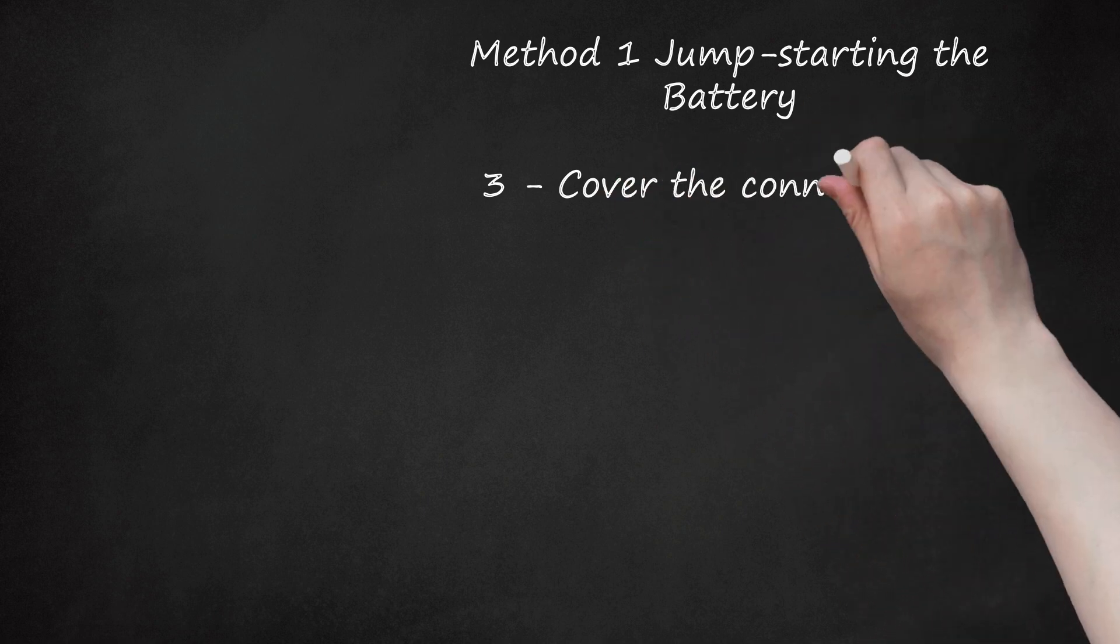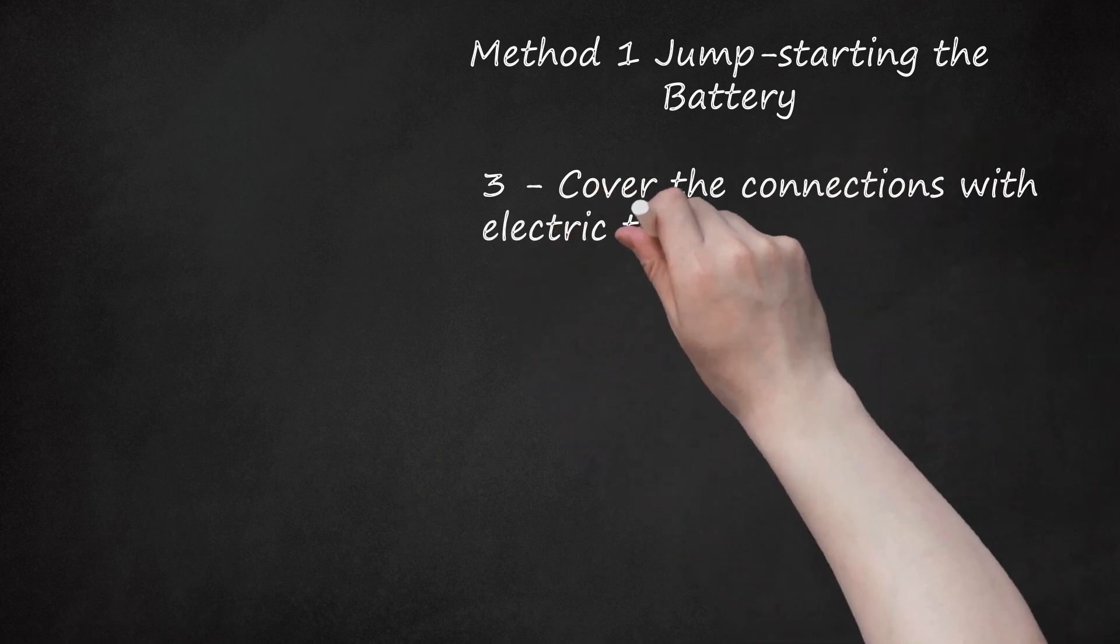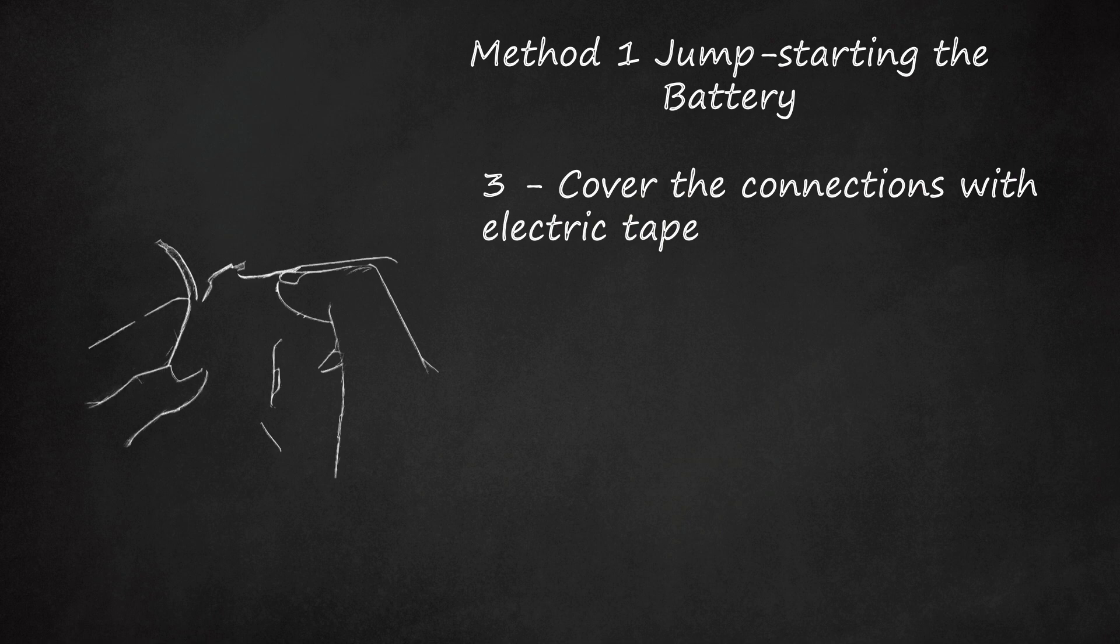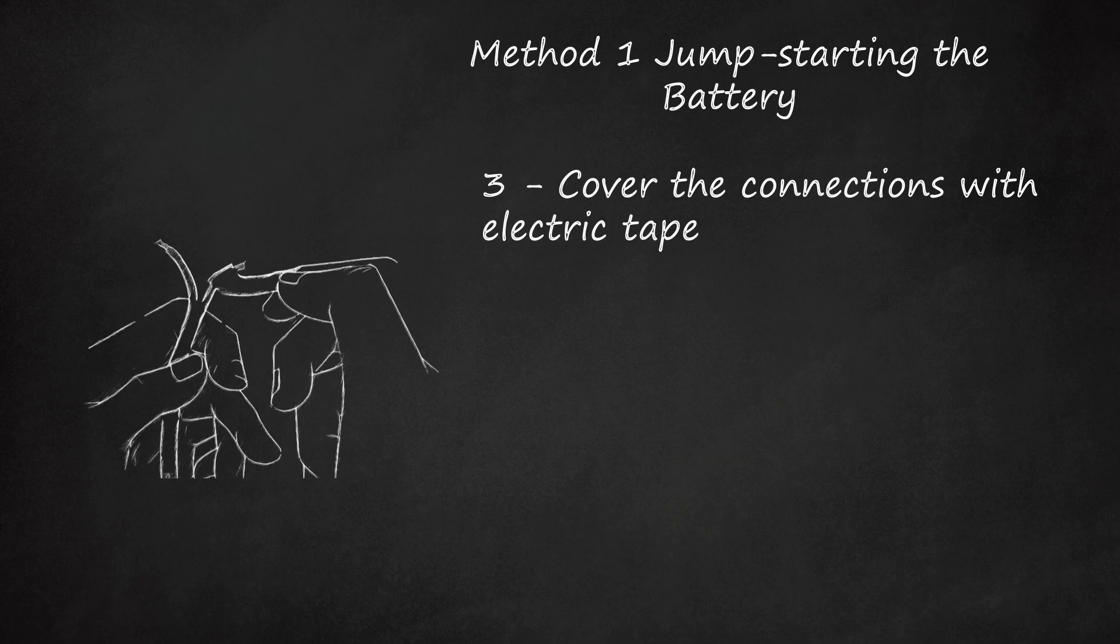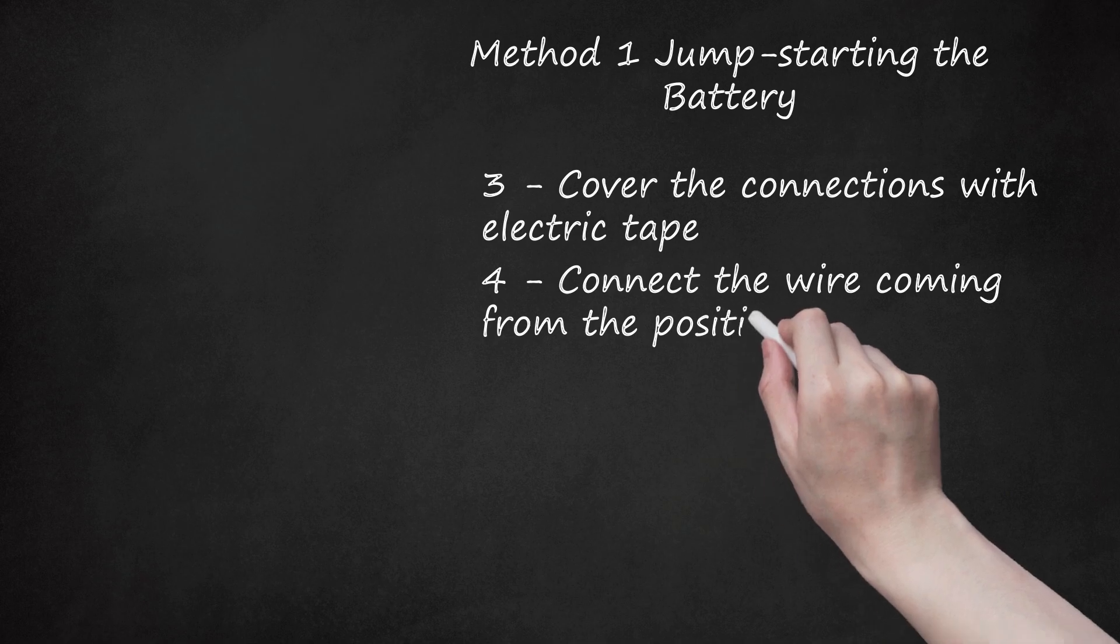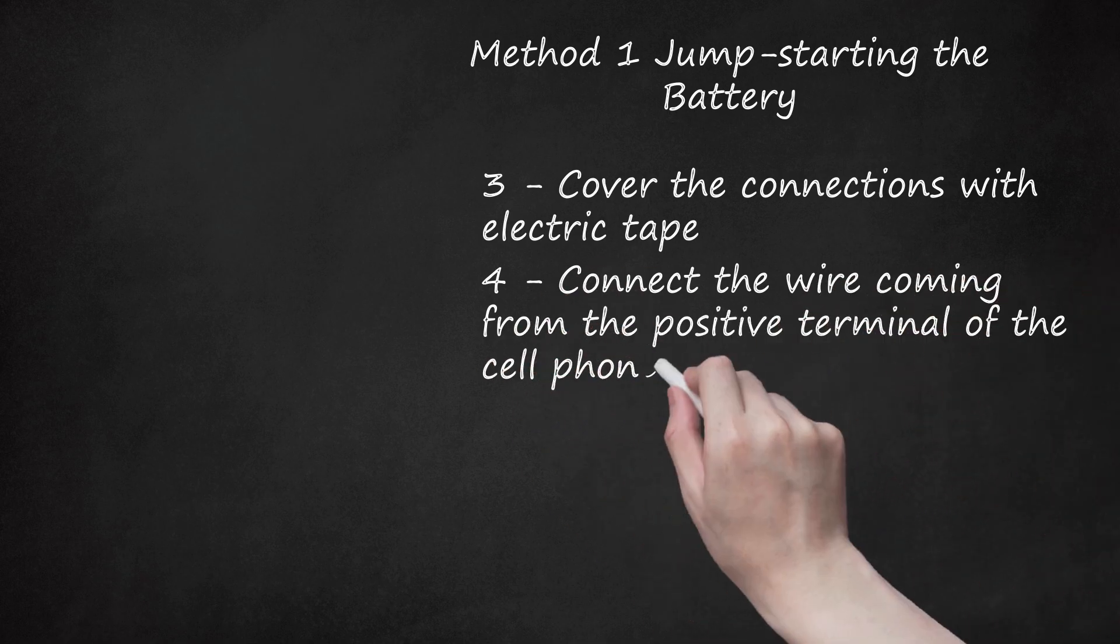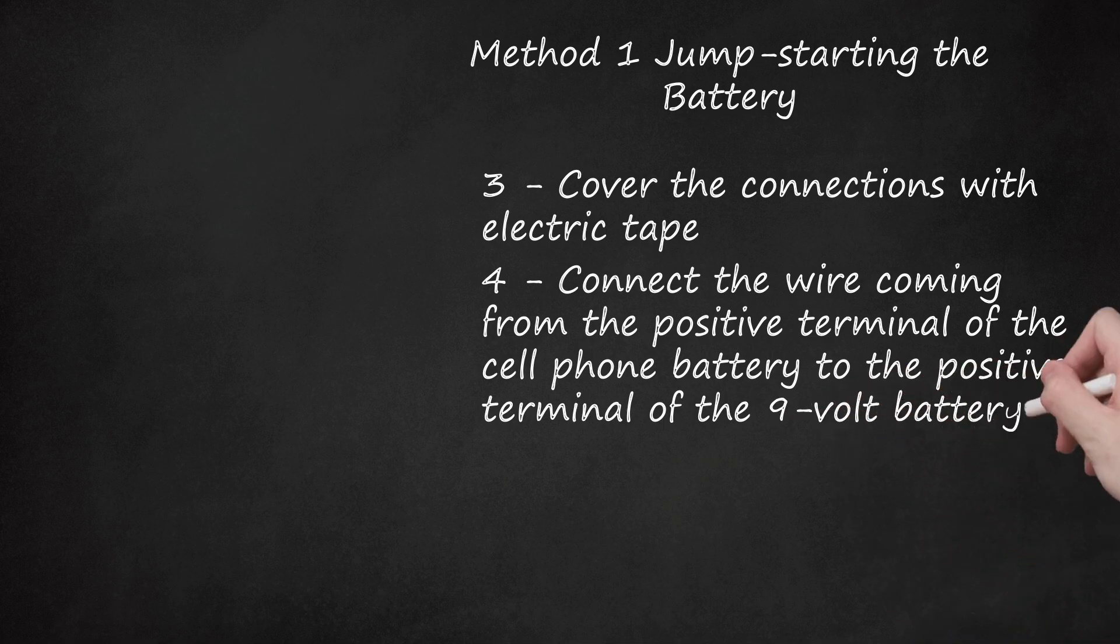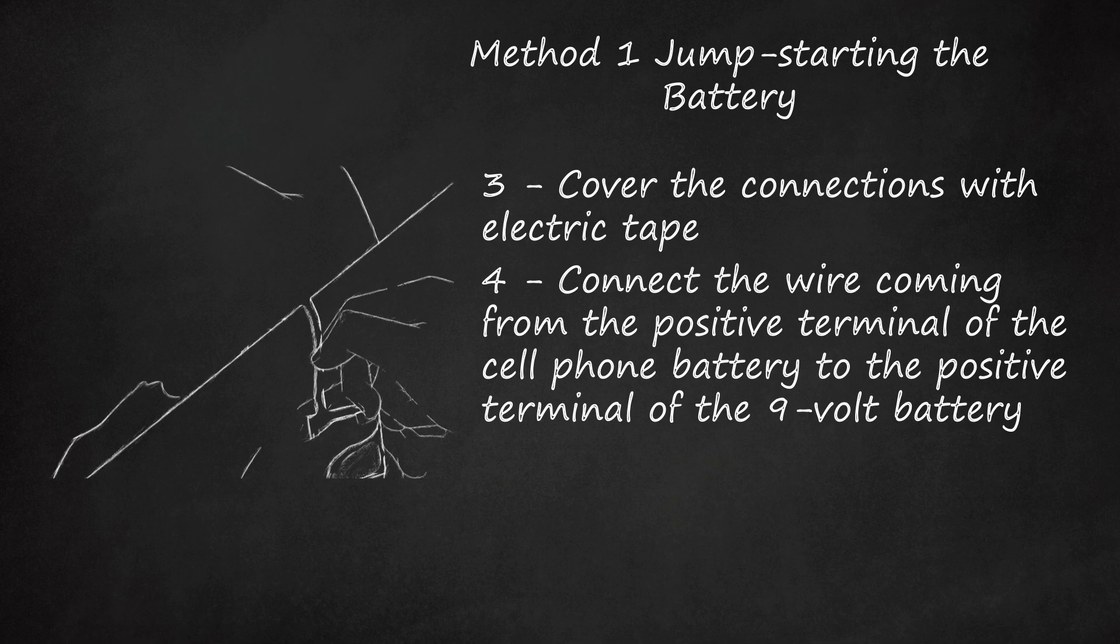Cover the connections with electric tape. Take note which wires go to which terminals of the battery, as not to connect a positive side to a negative. Connect the wire coming from the positive terminal of the cell phone battery to the positive terminal of the 9-volt battery. Do the same with the negative wire. Do not connect opposite polarity, positive to negative, because this can short out your cell phone battery.